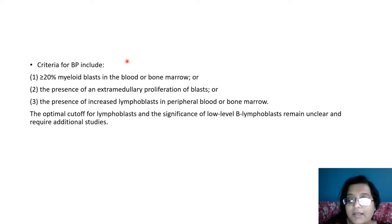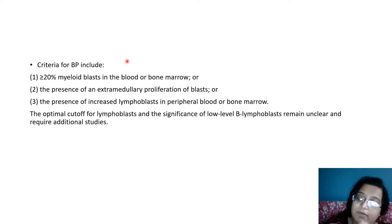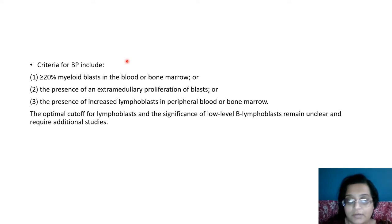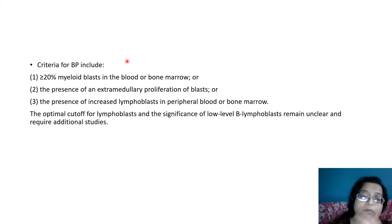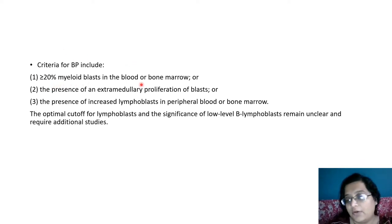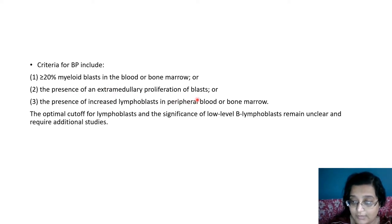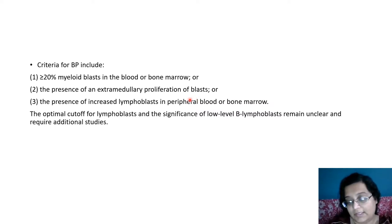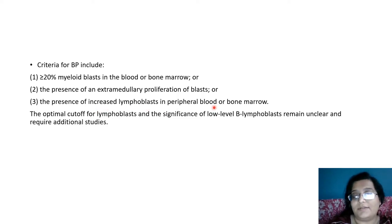Now it is stated that categorizing CML as accelerated phase has no clinical significance. It is sufficient to tell the clinician that the patient is in chronic phase. What is more relevant is whether the patient is in blast phase. The criteria for blast phase include: greater than or equal to 20% myeloid blasts in blood or bone marrow, or presence of extramedullary proliferation of blasts such as myeloid sarcoma without blasts in the marrow or peripheral smear.